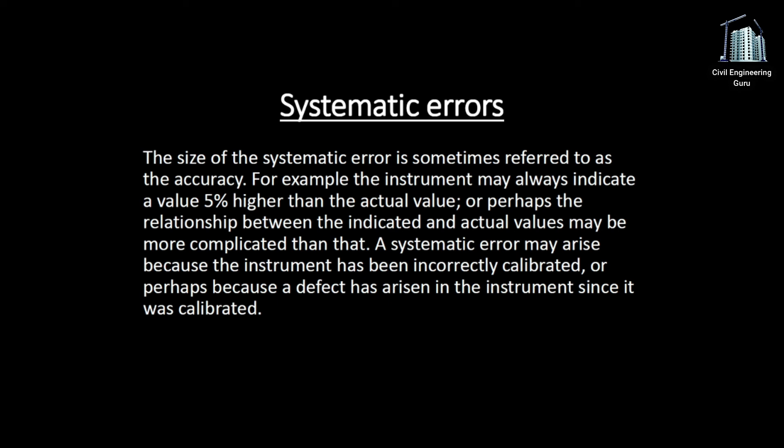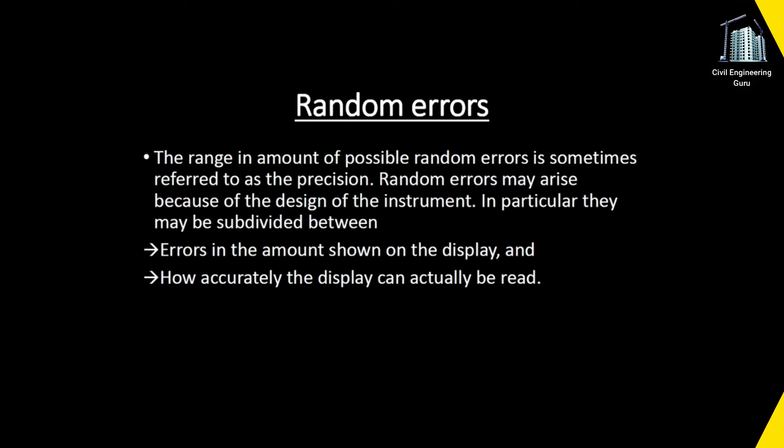The range and amount of possible random errors is sometimes referred to as the precision. Random errors may arise because of the design of the instrument — in particular, they may be subdivided between errors in the amount shown on the display and how accurately the display can actually be read.